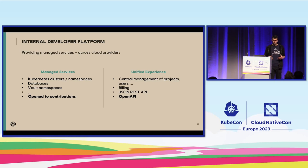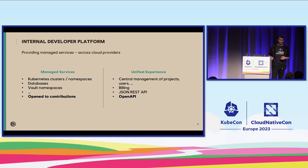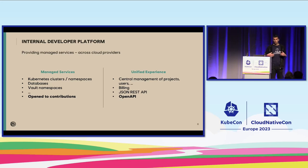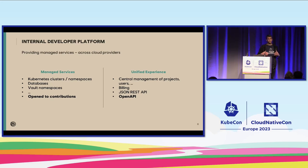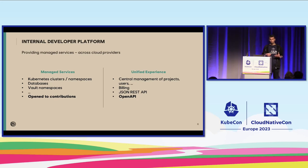One important thing about this platform is that it's open to contribution inside Ubisoft. We have lots of teams — it's like 20,000 people working there. For example, there is another team providing Prometheus metrics as a service, storing and querying, and they've integrated their service inside our platform. The goal is that this platform is not only built by our team, but services can be contributed by anyone inside Ubisoft. We want a unified experience, meaning people can create their projects, other users, and resources linked to those projects — the same way you can do that with AWS, except you can host your resource in any cloud provider.